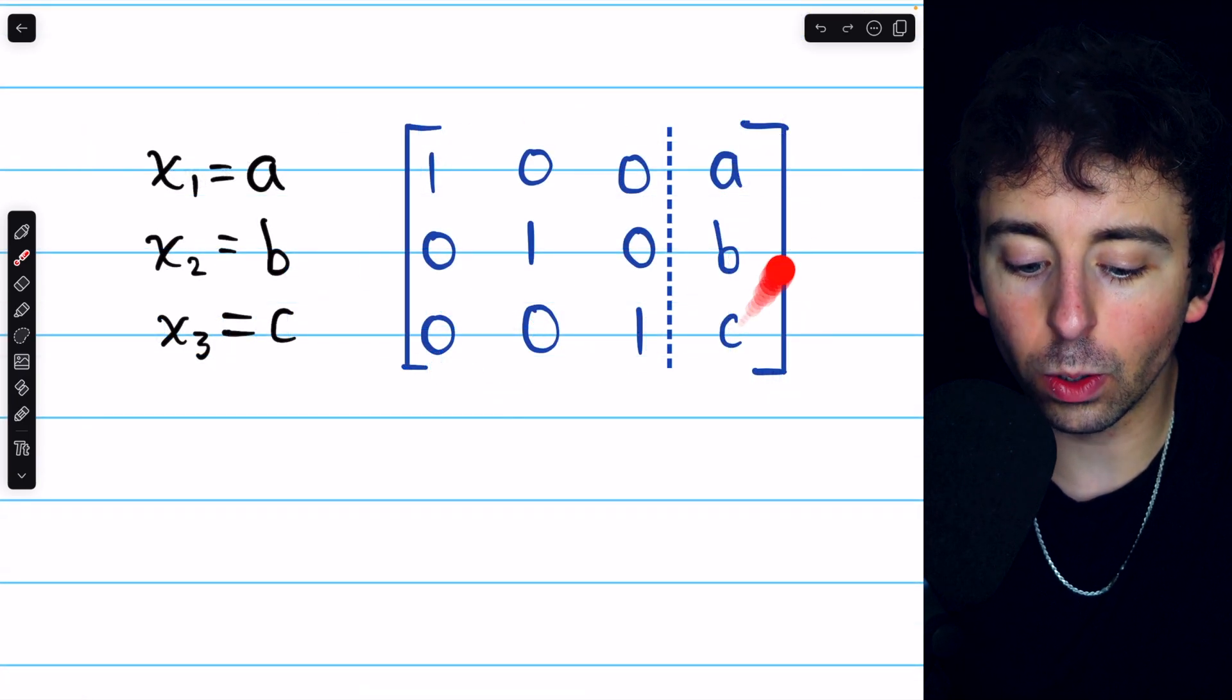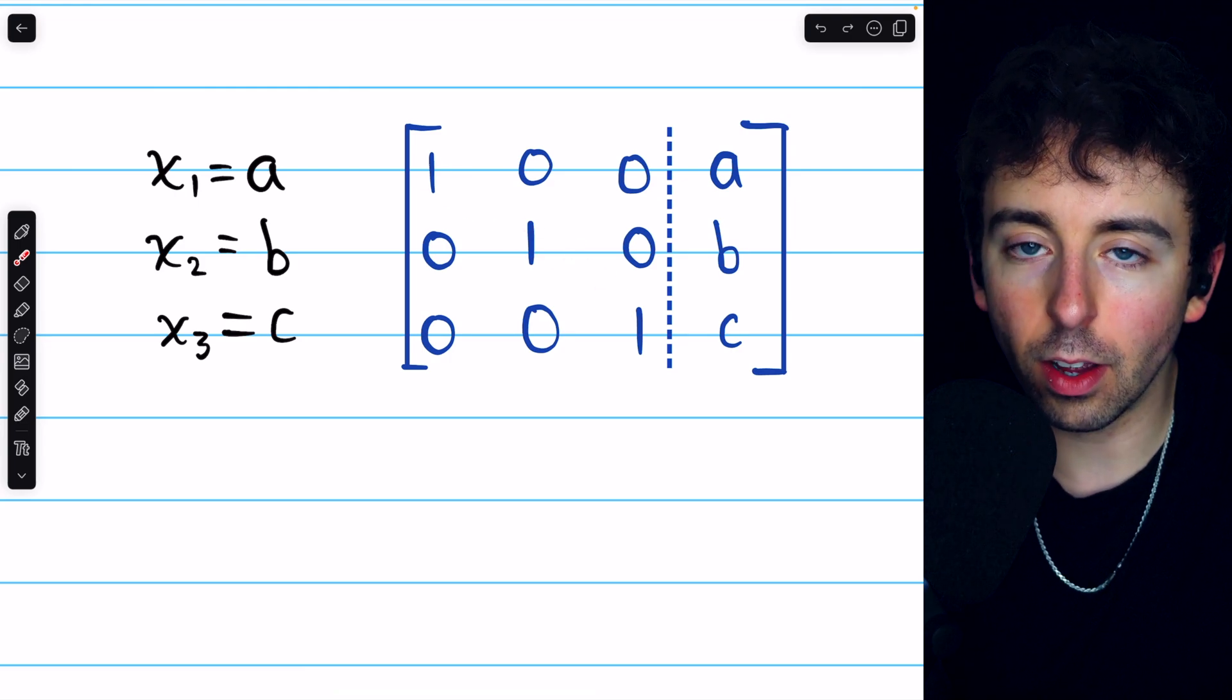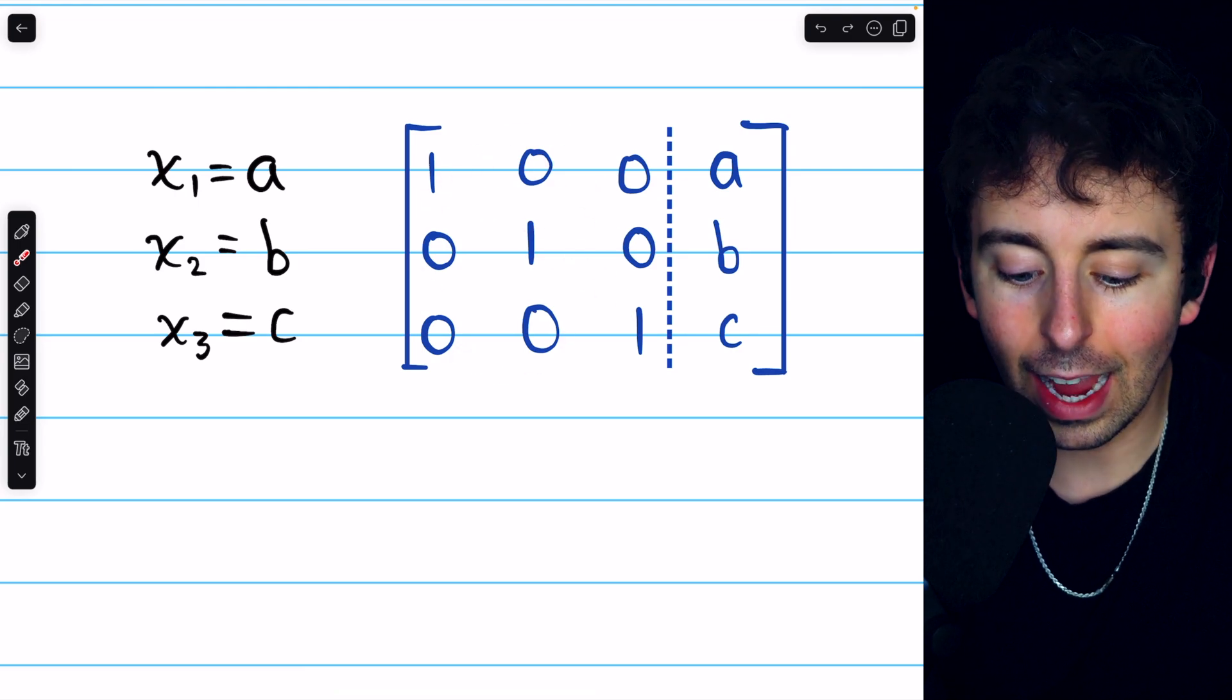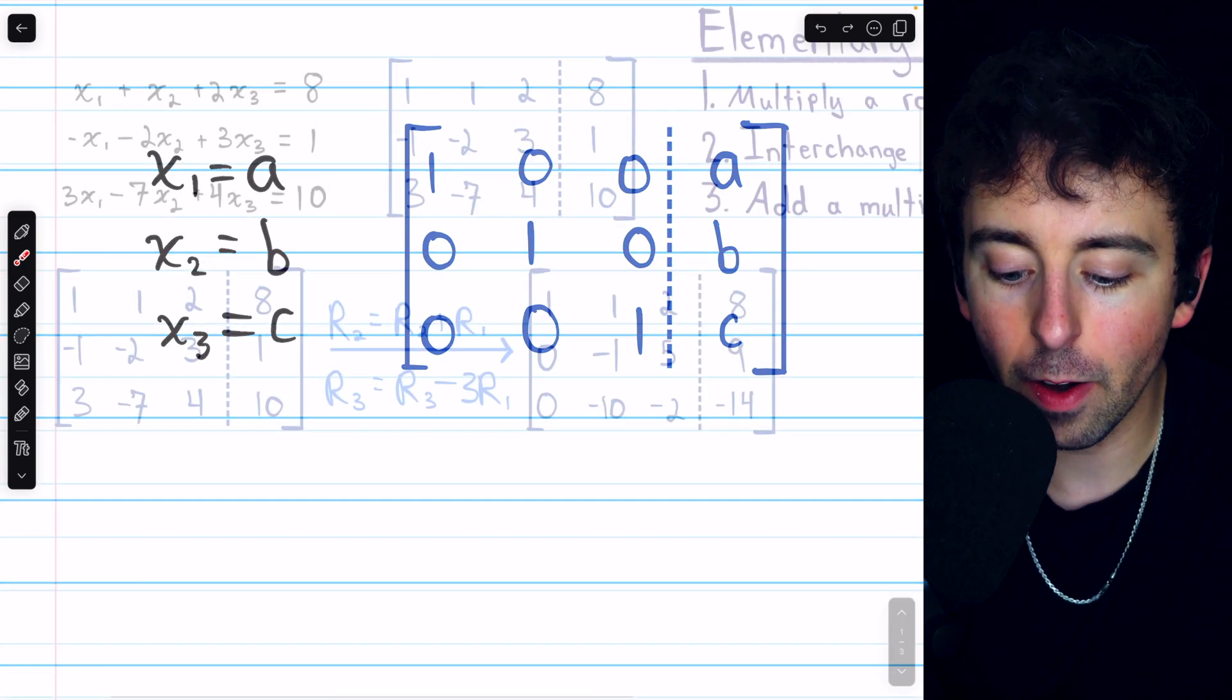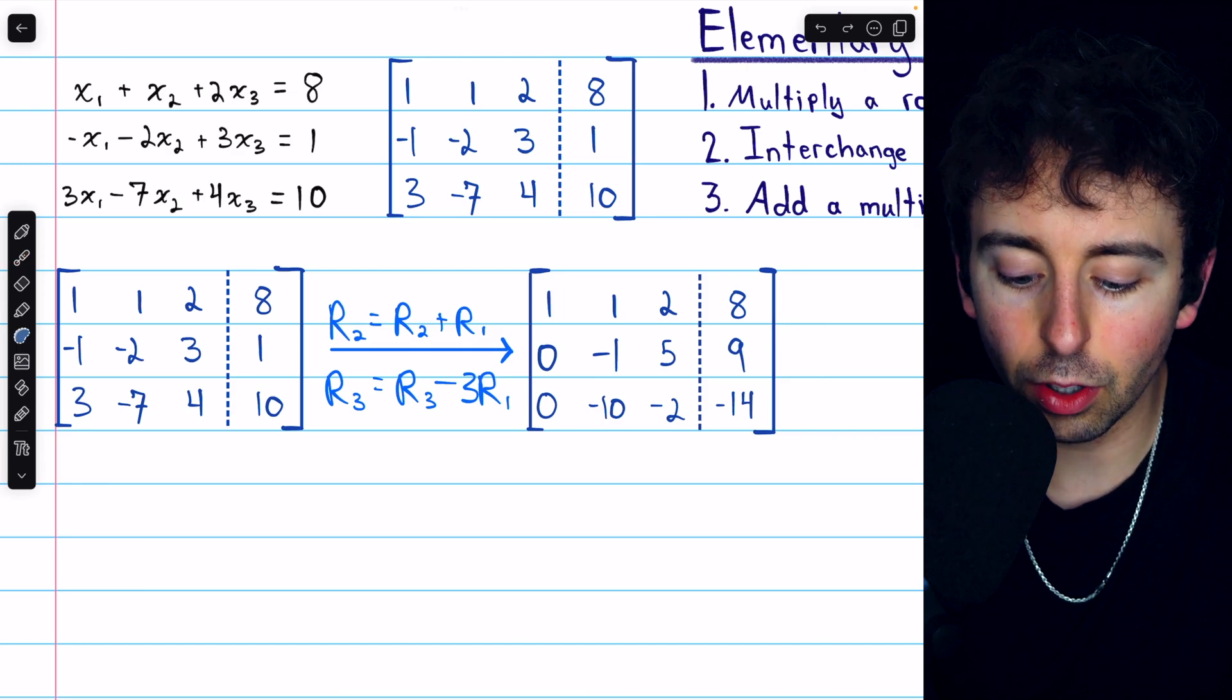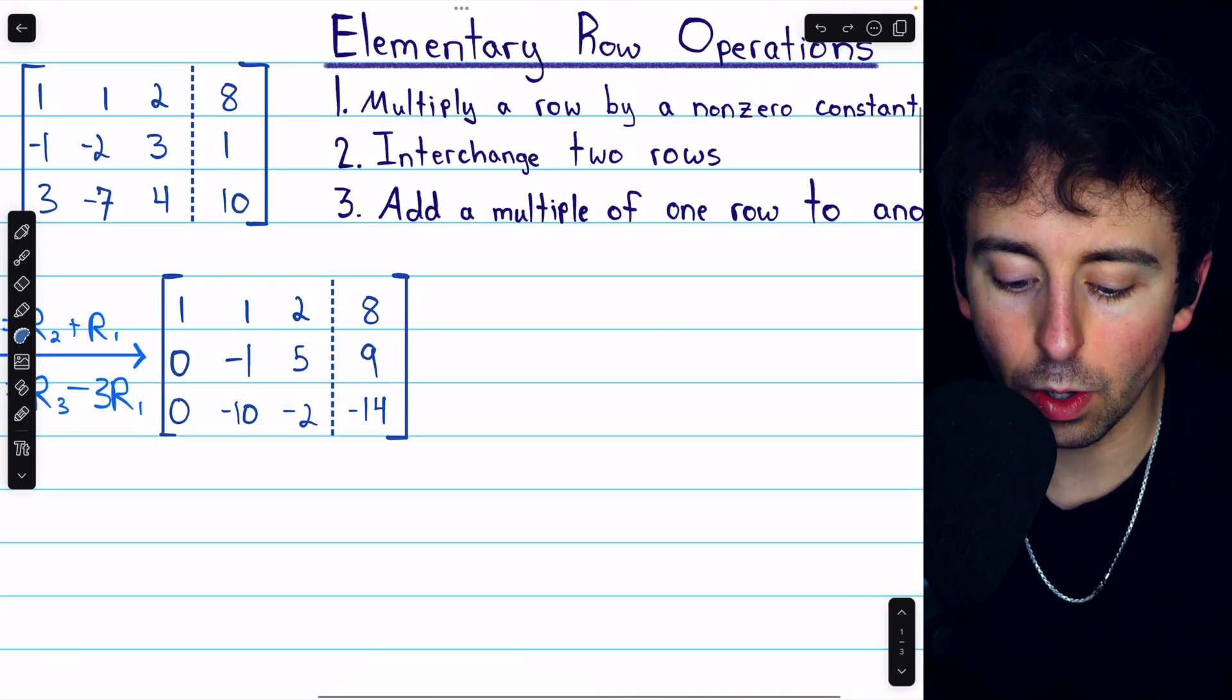Now remember what the end goal looks like. It has 1s on the diagonal of the coefficient part of the matrix, and it has 0s elsewhere. Right now, we have a negative 1 here on the diagonal.